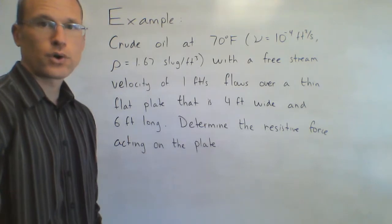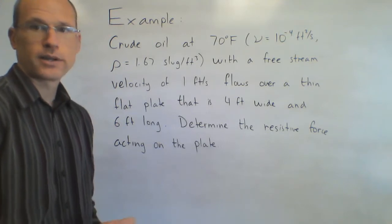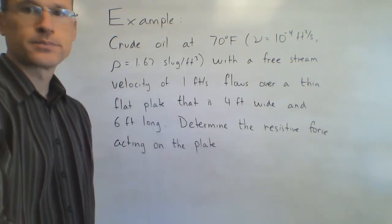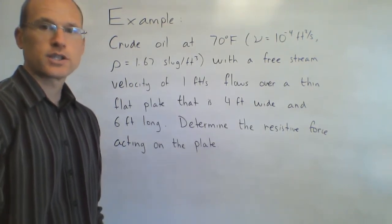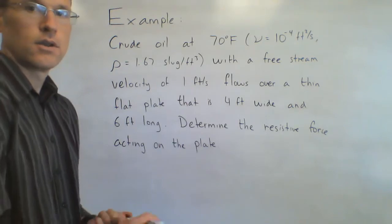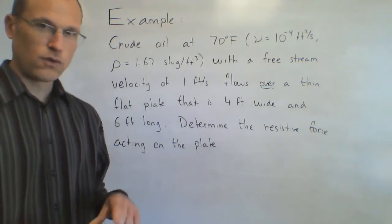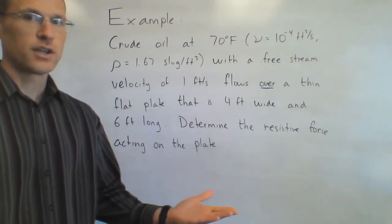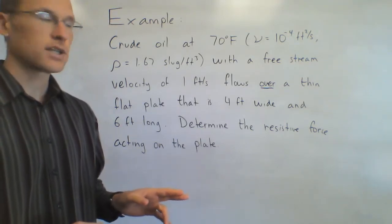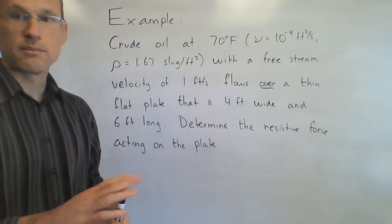Time for an example: crude oil flowing over a flat plate at 1 foot per second. We want to find the resistive drag force acting on the plate. Two things to note before the solution: first, the oil is flowing over the plate, meaning not under it, and we'll see what that means. Second, there are two dimensions — the plate is 4 feet wide and 6 feet long.